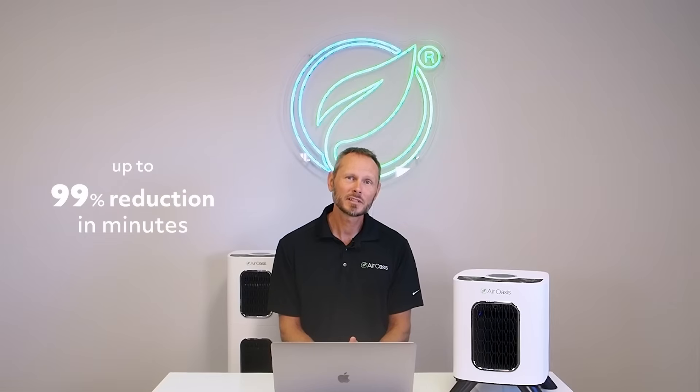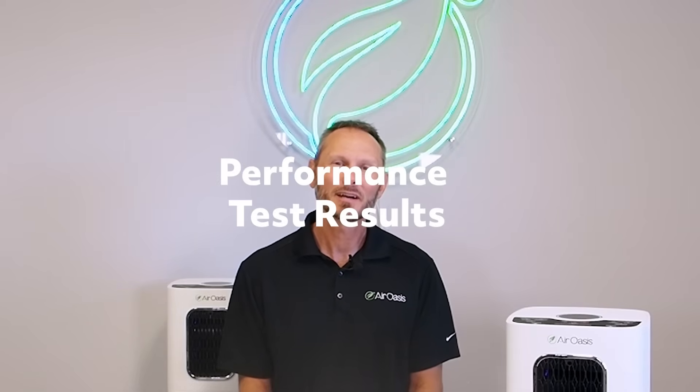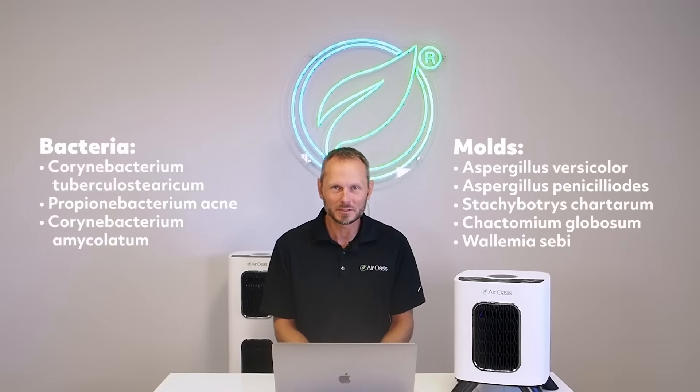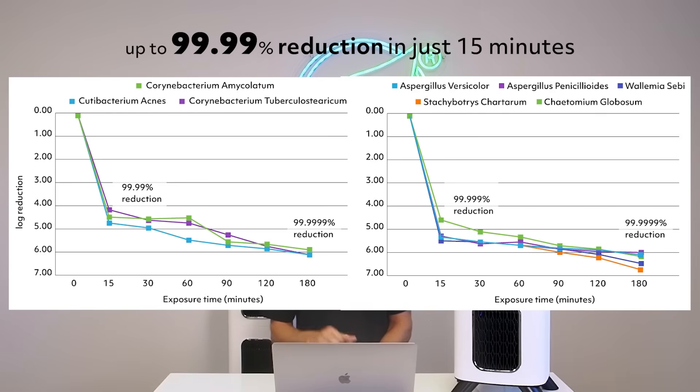The iAdaptAir 2.0 series also does a great job of reducing VOCs, chemicals, odors, and biotoxins — lab tests show reductions up to 99% in just minutes. In third-party accredited lab tests, the iAdaptAir series has reduced viruses such as H1N1 up to 99% in just minutes. The series was recently tested by an ISO 9001 NABL accredited lab against five molds and three bacteria commonly found in water damaged buildings, showing up to 99.99% — a five-log reduction — of these contaminants in just 15 minutes.